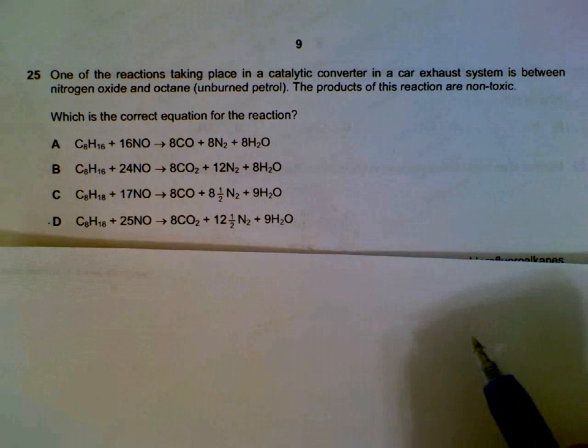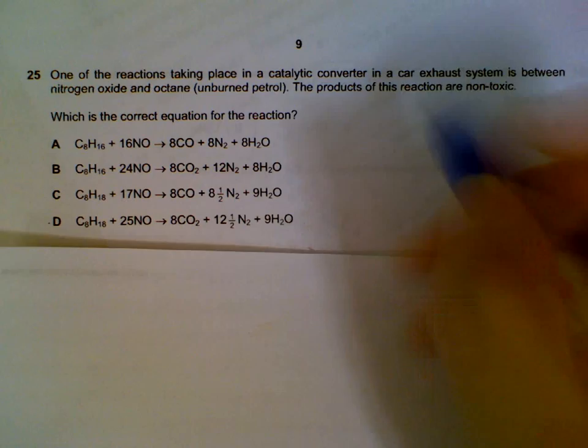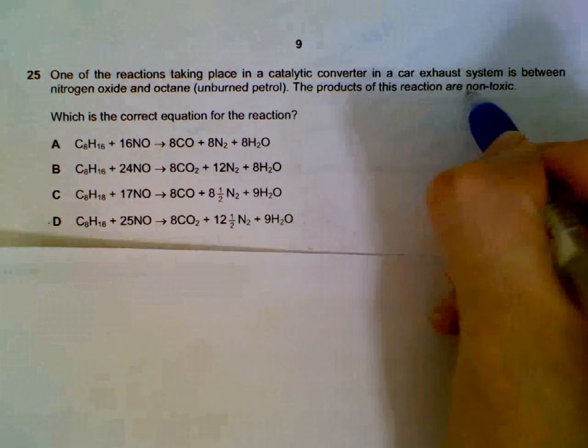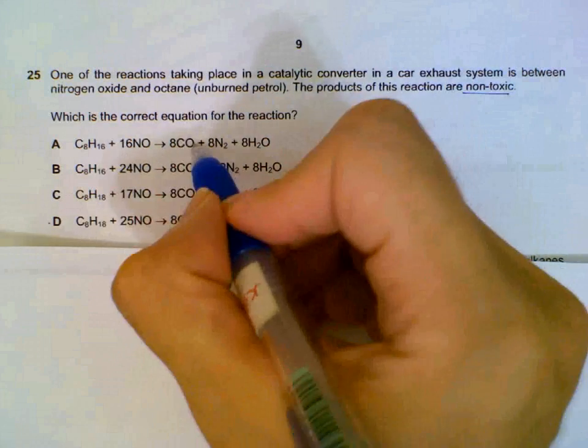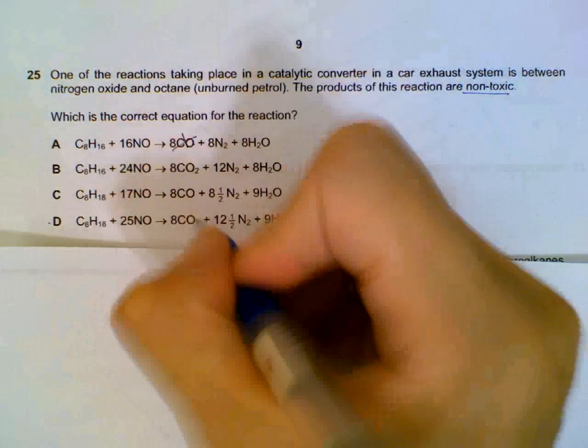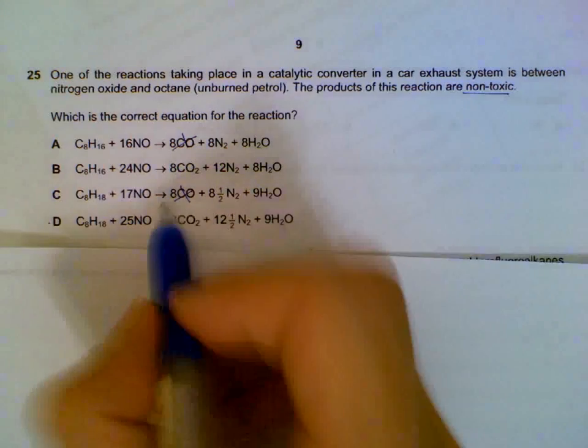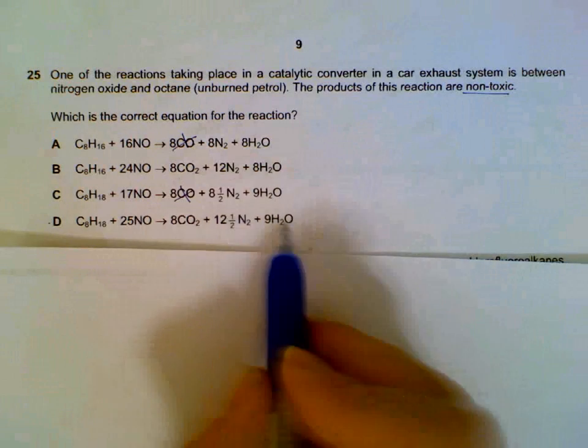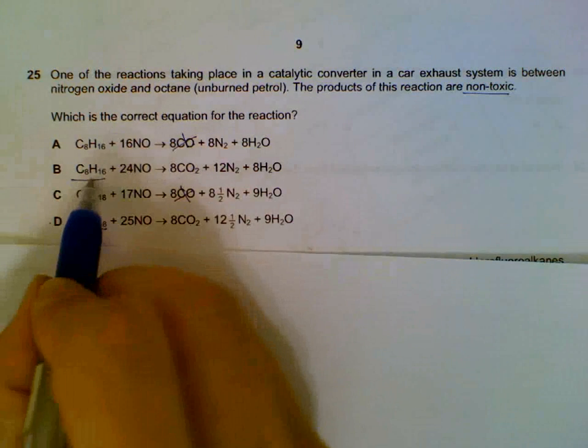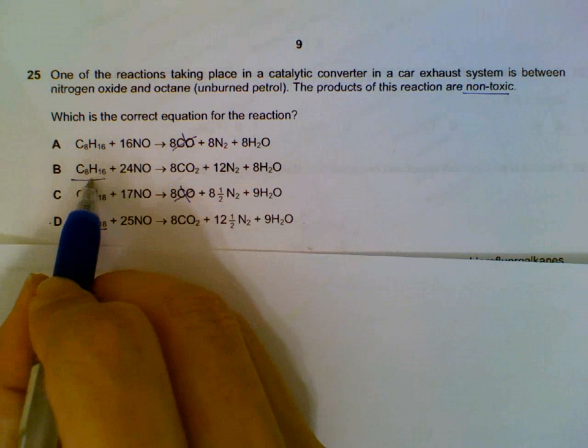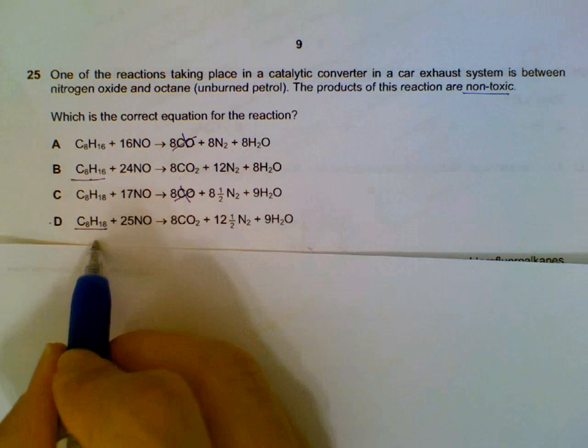Reaction in the catalytic converter in a car exhaust, the products are non-toxic. We have carbon monoxide in some options, which we have to eliminate because we want non-toxic gases. All of them are the same on the right side. The difference is we are looking for octane. This is not octane. For option B, this is octene. We want octane, which is the alkane. So it will be D.